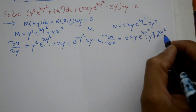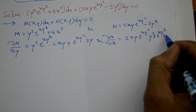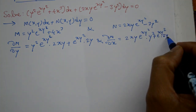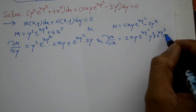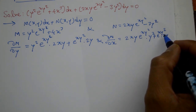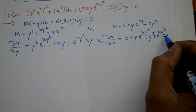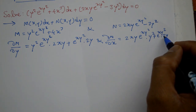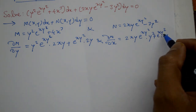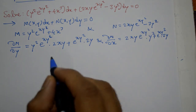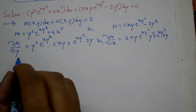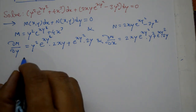So ∂N/∂x simplify ho ke: 2y · e^(xy²) ho gaya. Minus 3y² ka term constant tha, 0 ho jayega. Therefore ∂N/∂x = 2xy³ · e^(xy²) + 2y · e^(xy²) ho gaya.